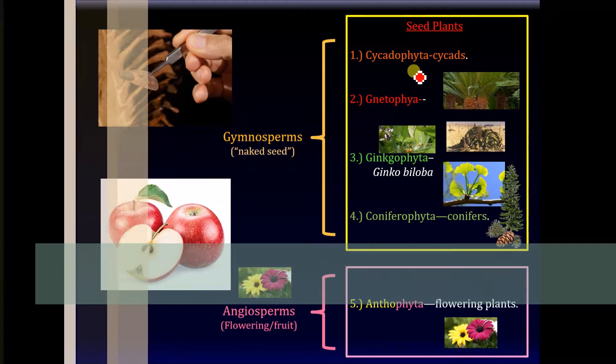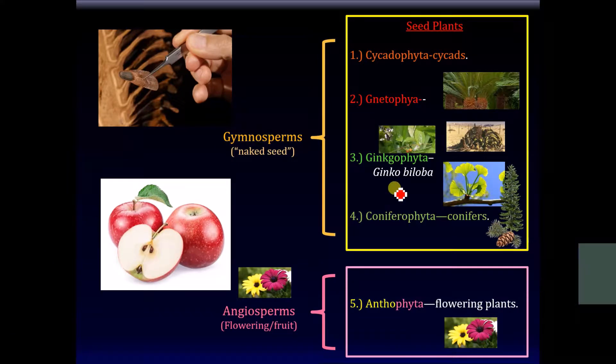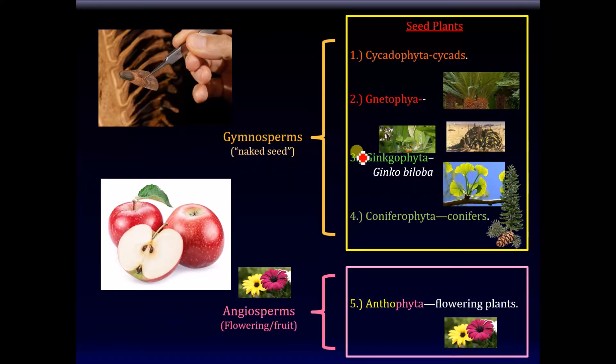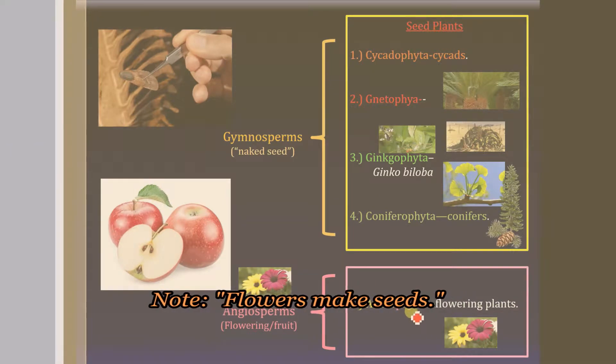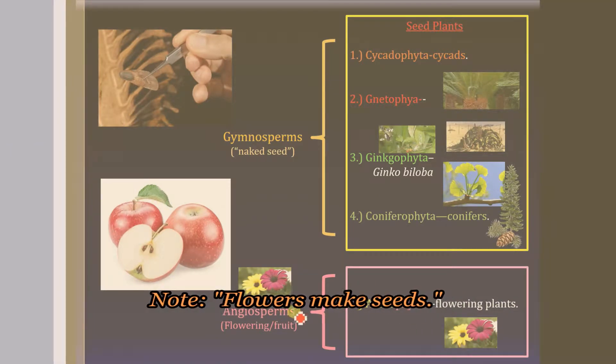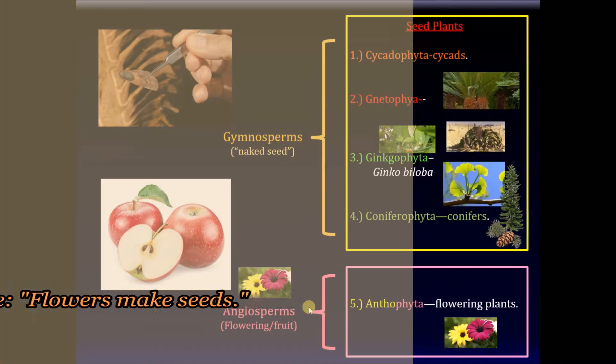So seed plants can be divided into two major categories. The first four categories of plants — the cycads, Gnetophyta, Ginkgophyta, and conifers — are the gymnosperms and they have simple types of seeds. The fifth category, the flowering plants, the Anthophyta, are the angiosperms.